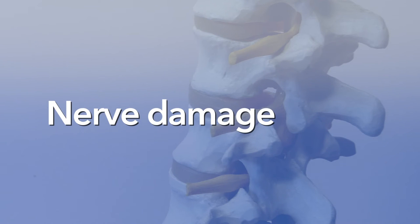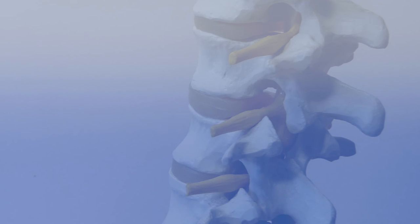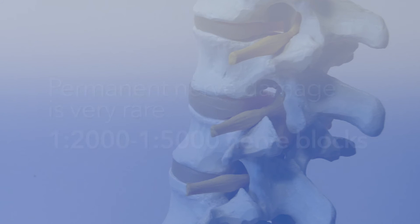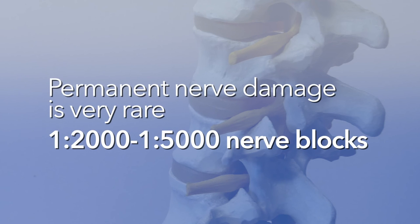Nerve damage: this is a very rare complication of an ankle block or popliteal nerve block. After a peripheral nerve block, temporary loss of feeling, pins and needles and sometimes muscle weakness in the area in which the nerves have been blocked is common and to be expected. In around one in ten patients, this effect may last for a few days or even a few weeks, but almost all make a full recovery. Permanent nerve damage after a peripheral nerve block is very rare and the risk is estimated at around one in two thousand to one in five thousand patients.